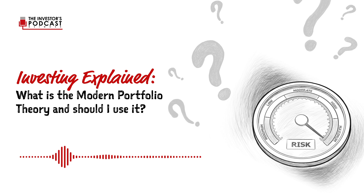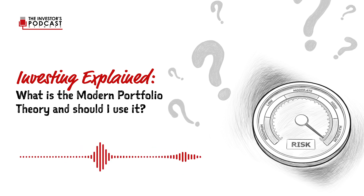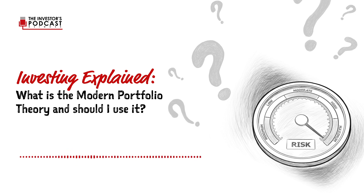MPT is taught in business schools worldwide, and one of the many issues with the model is that it measures risk in terms of volatility, and it doesn't include any thinking in terms of intrinsic value or assessment of the underlying securities. There is no such thing as intrinsic value in the model because it assumes that both stocks and bonds are priced correctly at all times, and that all asset returns are distributed through a bell-shaped curve around a fictitious assumed rate for the stock market.